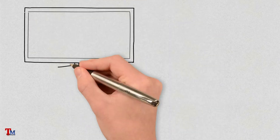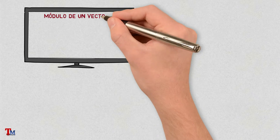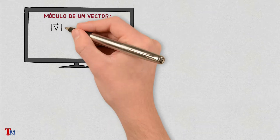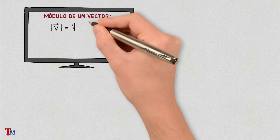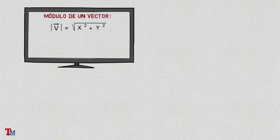To start, we will make a recording of some topics already seen in previous videos, such as the module of a vector, which is defined as the square root of the sum of the squares of its components. In this video we will not explain it, but if you have any doubts, I will leave you the link in the description where we explain how to calculate the module or the length of a vector.